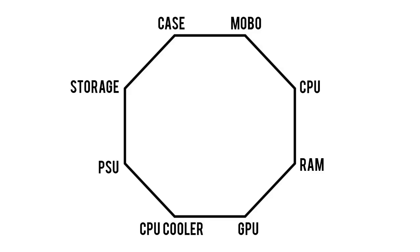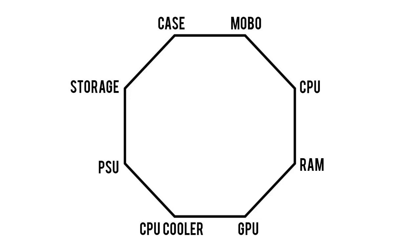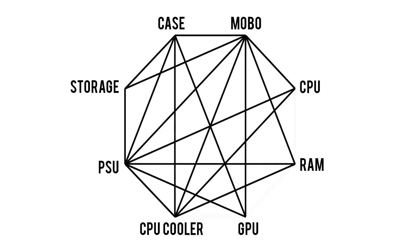In order to thoroughly explain the vast network of PC part association, I've been working with a team of highly intelligent field mice to develop the Octagon of Compatibility. These are the eight main parts you'll most likely need to build your next PC. For the record, I've omitted optical drives because they're not nearly as relevant these days, and there was no more room in the Octagon. Looking at the chart, you can think of each of these parts as a puzzle piece that needs to fit with certain other parts in the group to make a working computer.